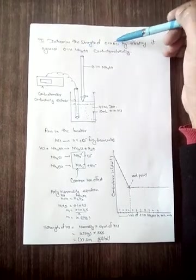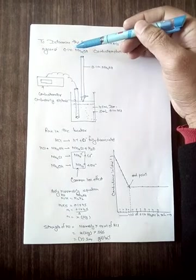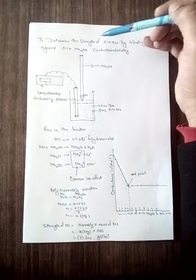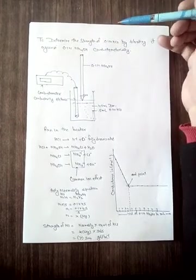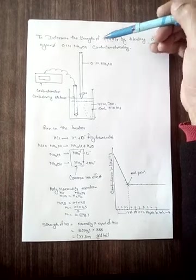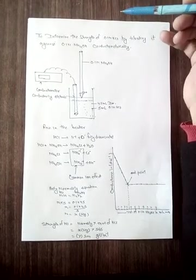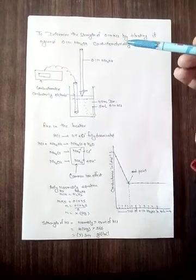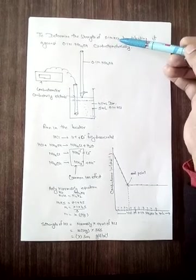First, we have to prepare 0.1 normal HCl and 0.1 normal ammonium hydroxide solutions. When we prepare these solutions, we take 5 ml of 0.1 normal HCl into a beaker.